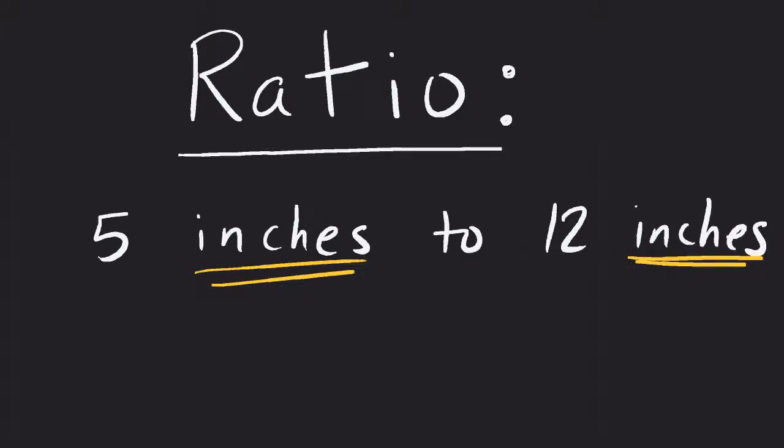So we can simplify this to just say we're really looking at 5 to 12, or sometimes you'll see it written as 5 colon 12, so that's 5 to 12.